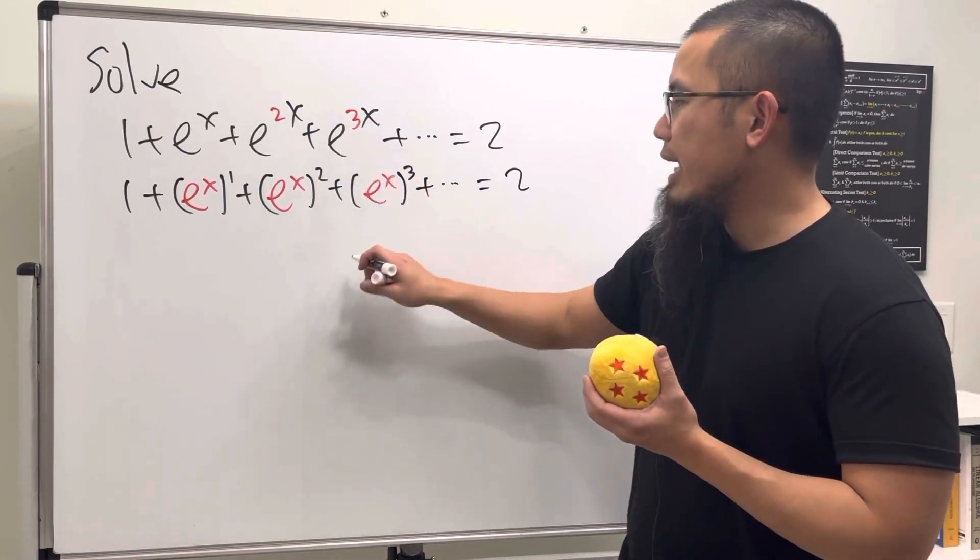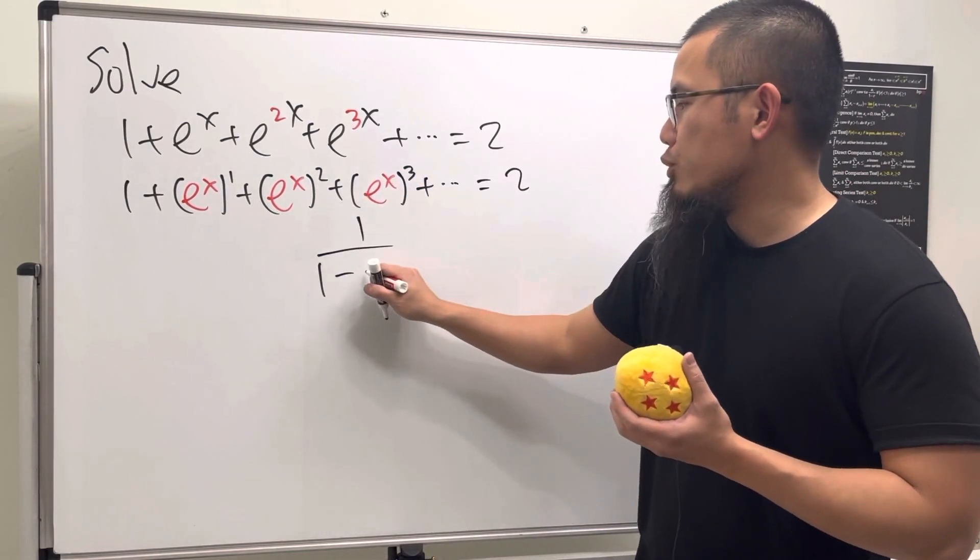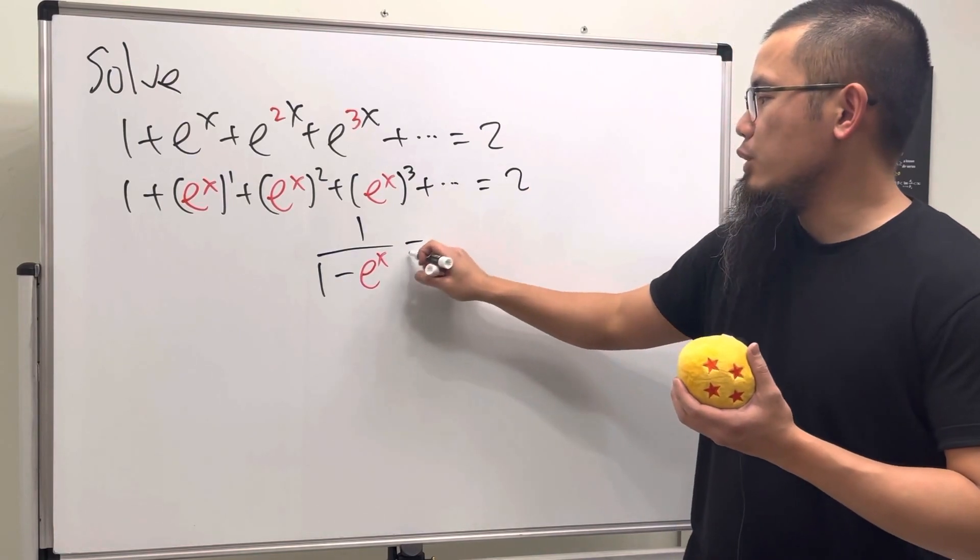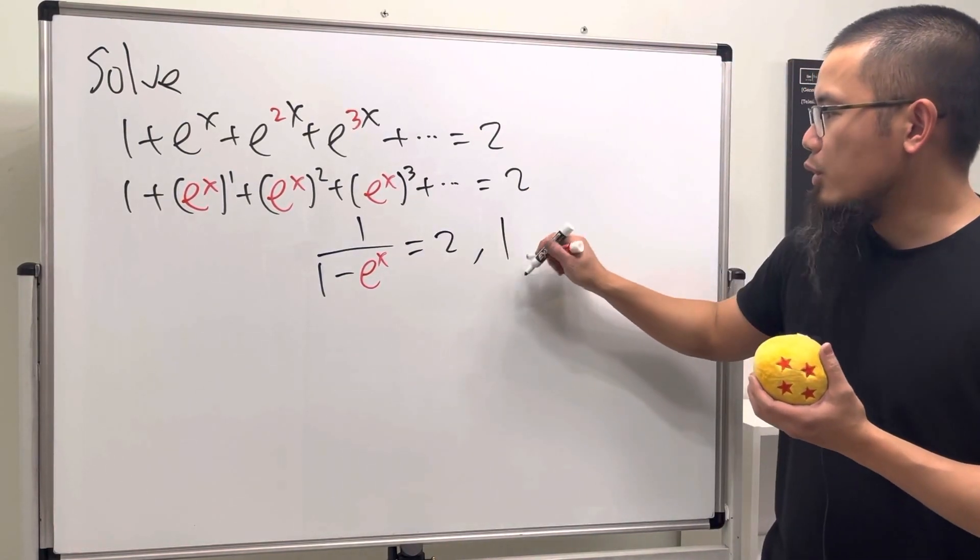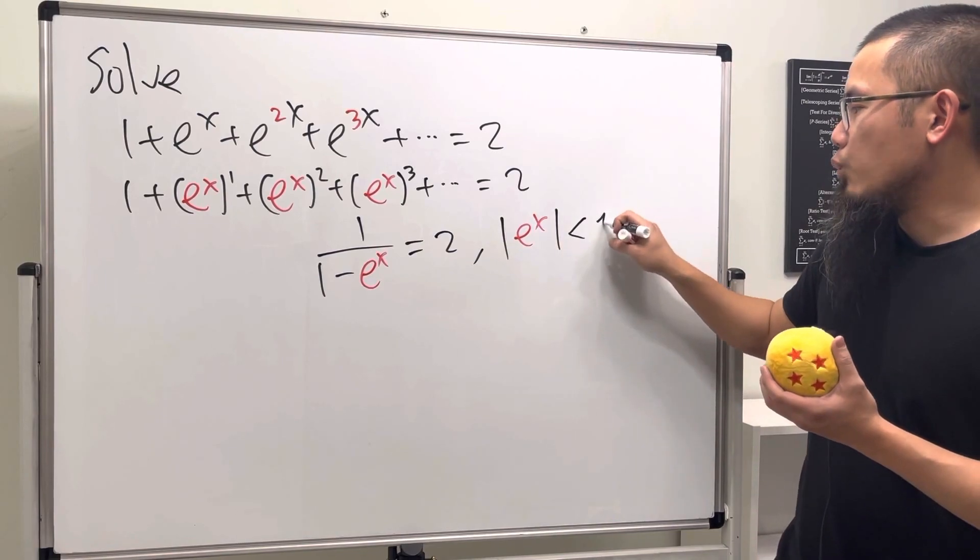Assuming that this right here does converge, we get 1 over 1 minus the common ratio which is e to the x, and this right here is just equal to 2. But we just have to make sure that the absolute value of the common ratio which is e to the x has to be less than 1.